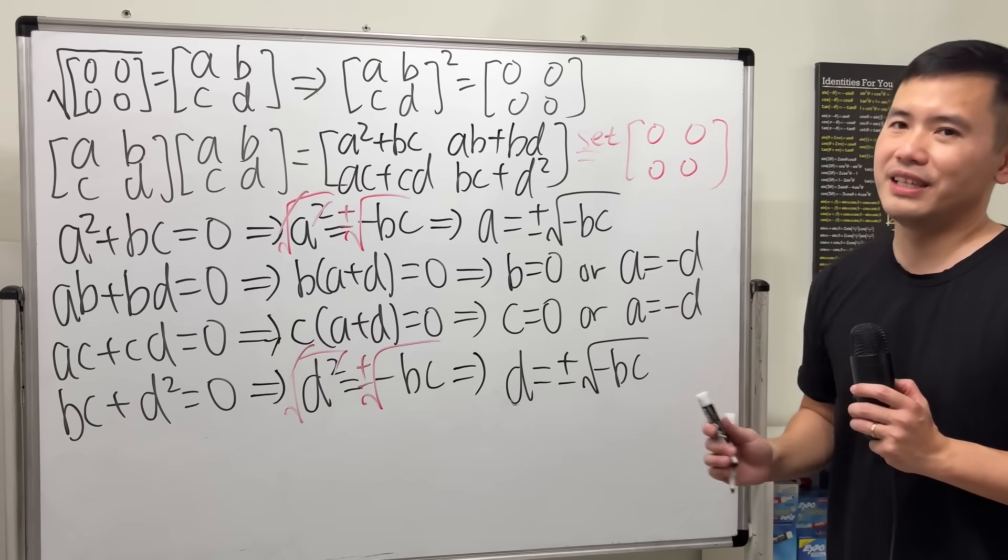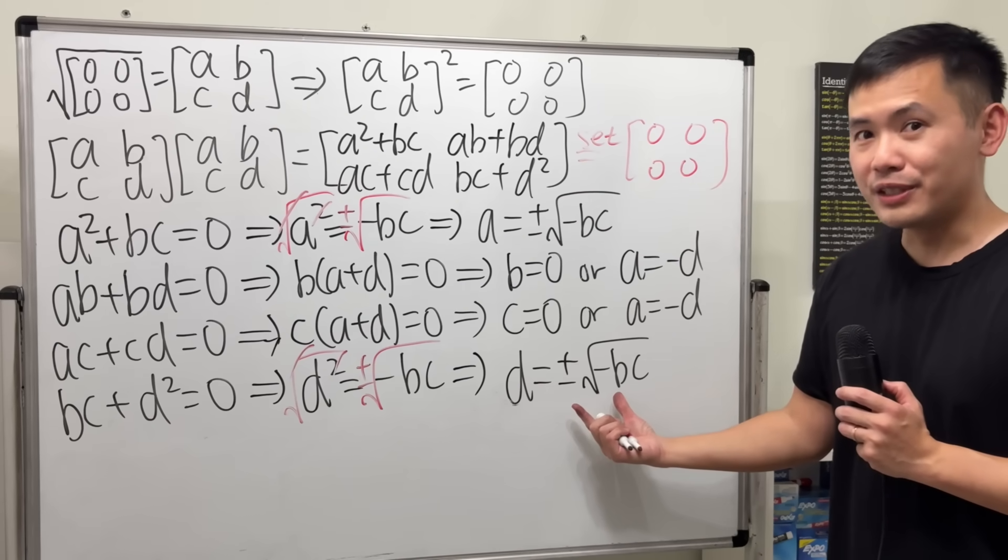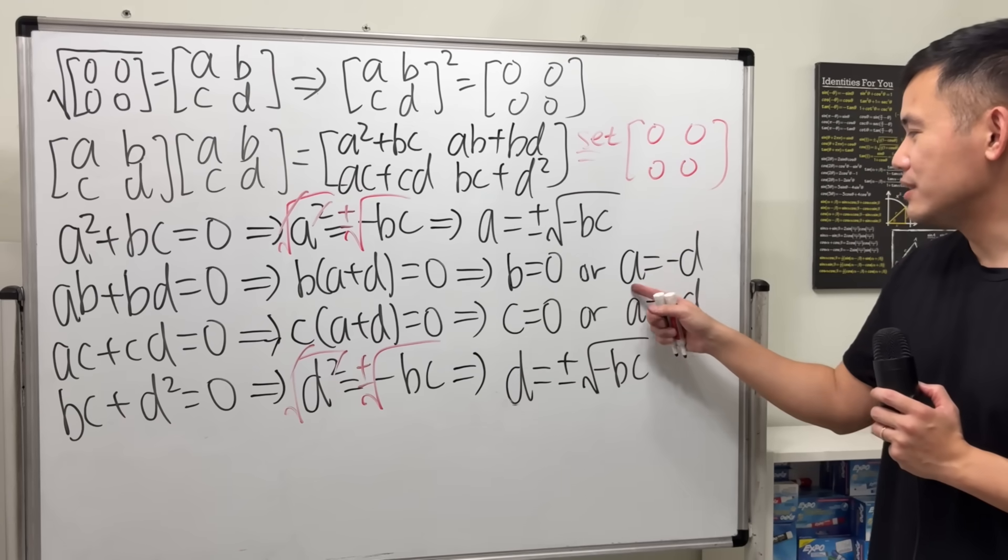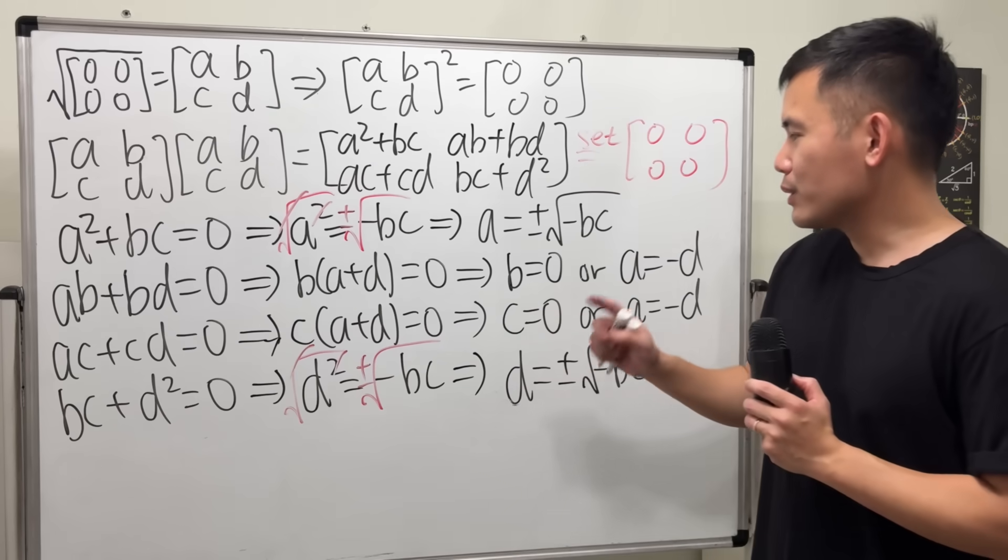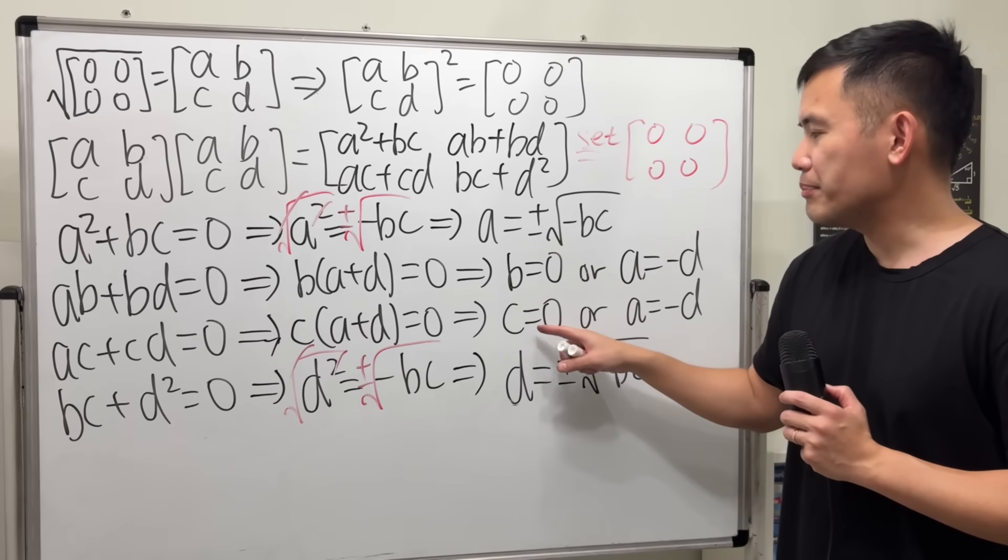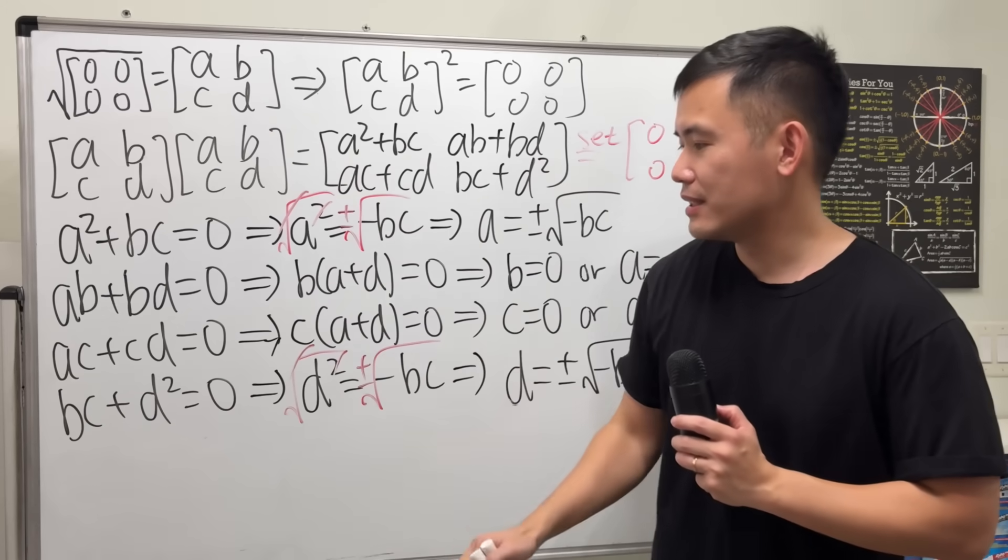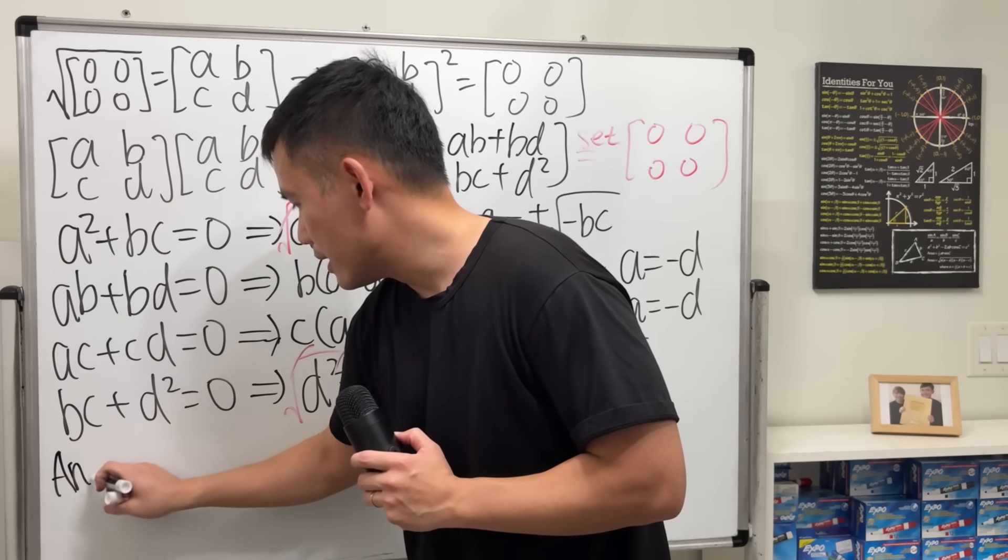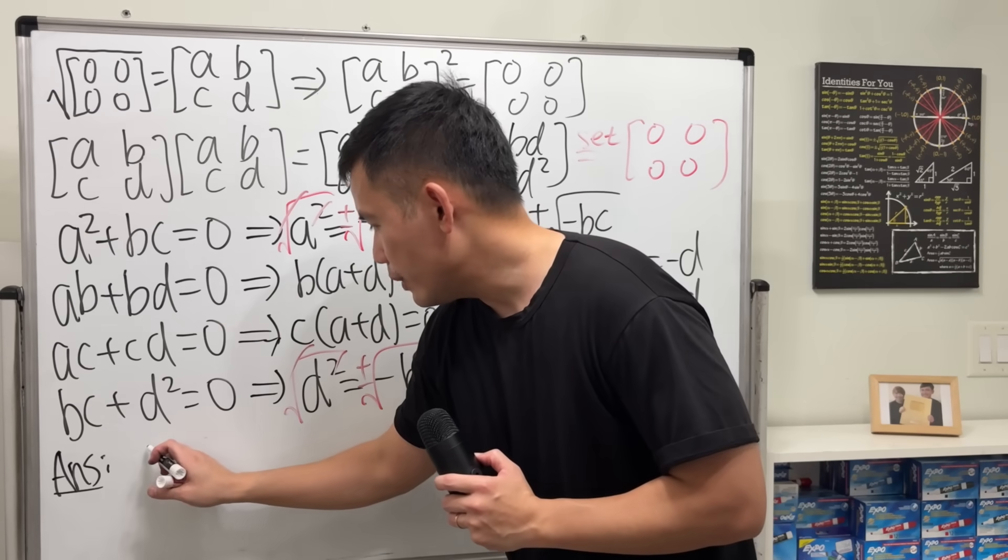Now, we are going to put everything together. Notice that this and that, they look the same. That's a good thing. Because that confirms with this connection. a is equal to negative d. And in fact, I will tell you, you don't have to worry about this and that. Because I'm going to write down the most general form of the answer for that right here for you guys.